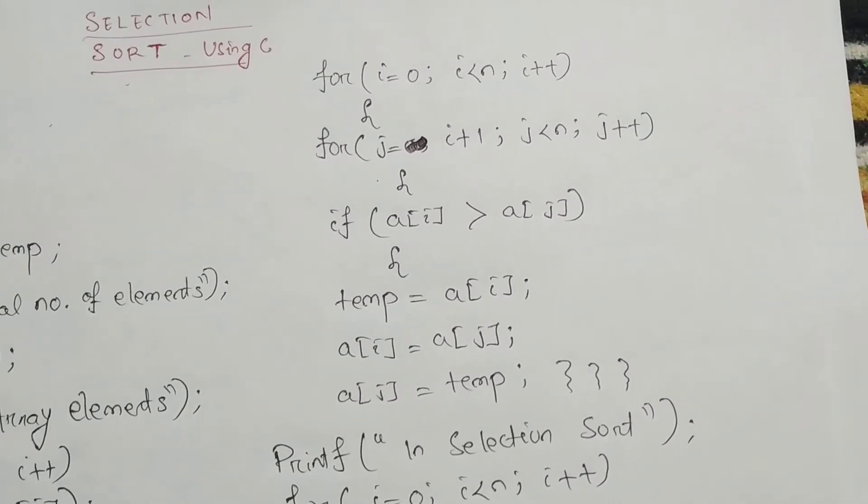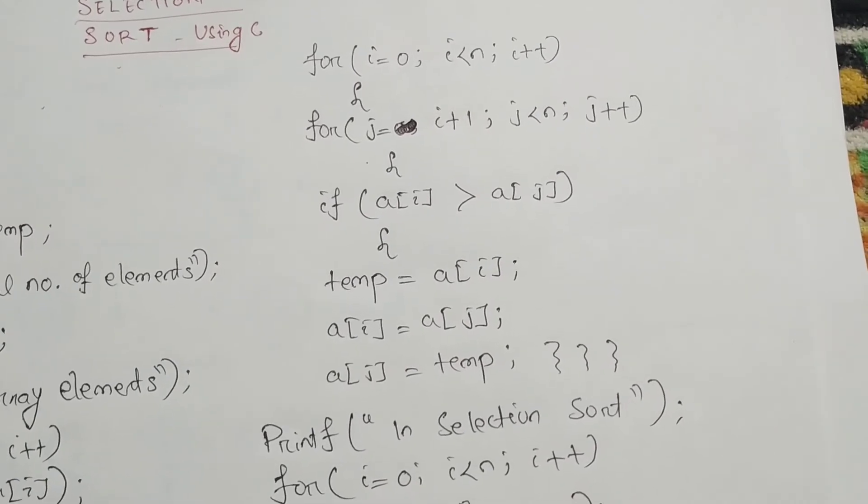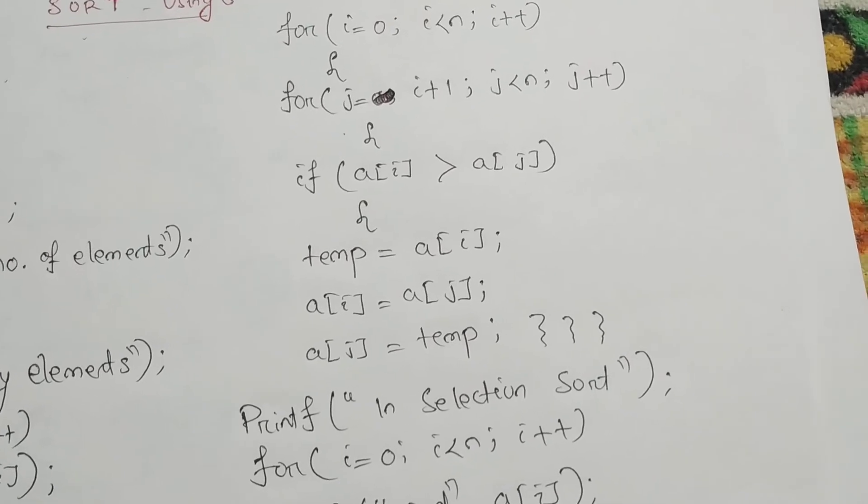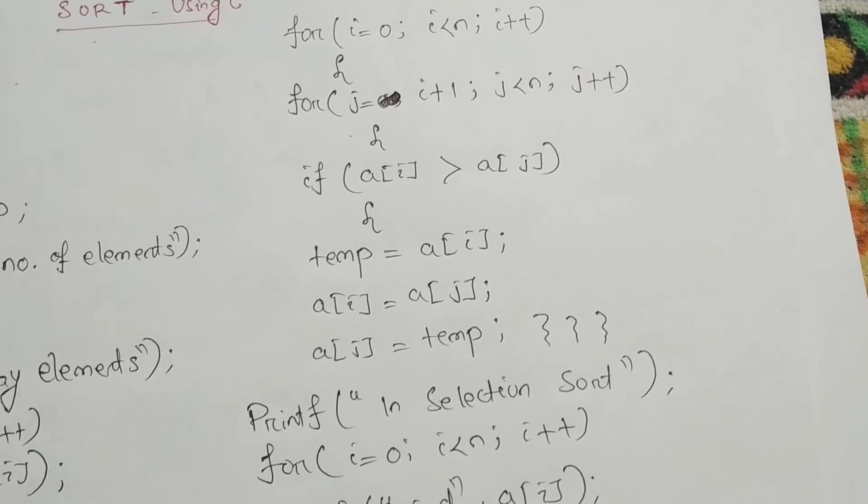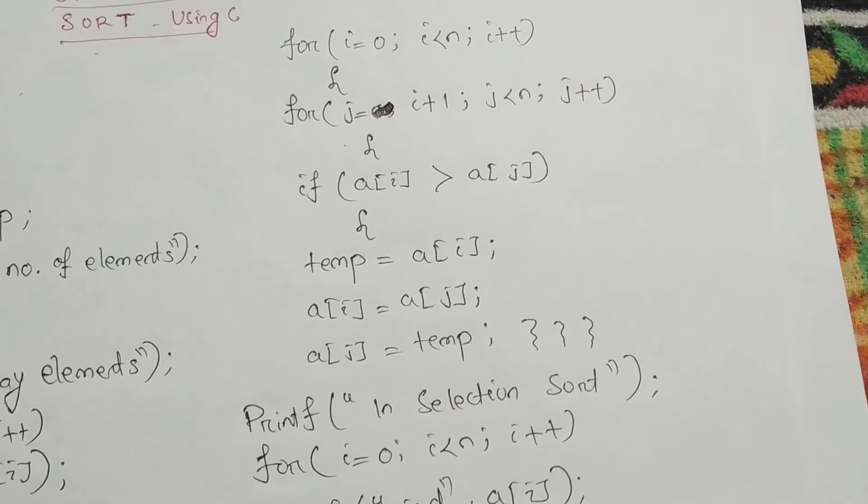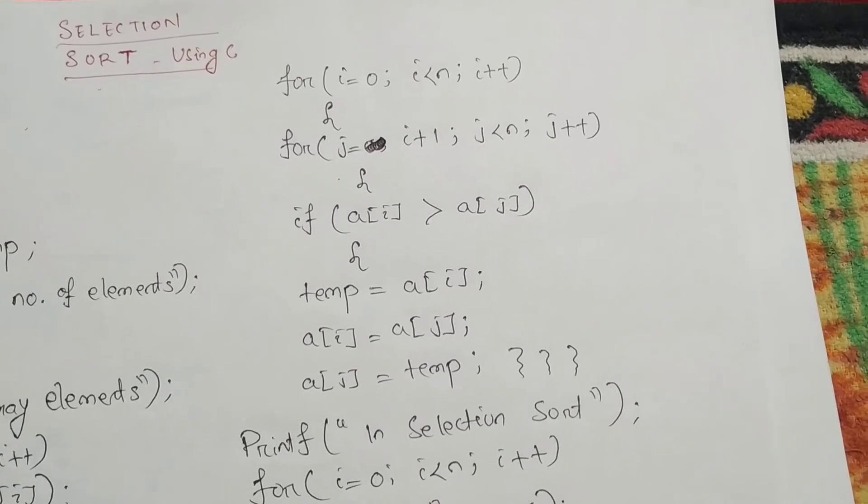In the inner loop, the j value is initialized as i plus 1, means the next element of the array will be compared. If a[i] greater than a[j], then there is the swapping. Here we are doing the swapping to find the minimum value and to swap the minimum value to its proper position. And it will be executed until satisfying the condition.